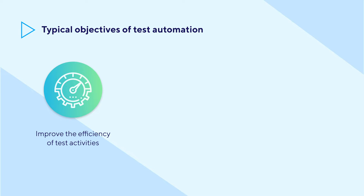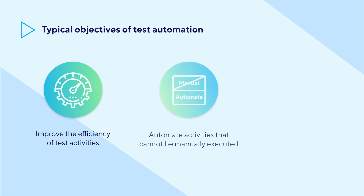Thus, it frees you to design new tests or explore the product in production. Second, test automation automates activities that cannot be executed manually. For example, adding 1,000 entries to your database for performance testing is a pain to do manually.